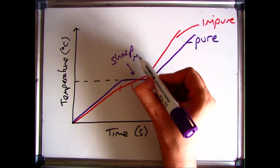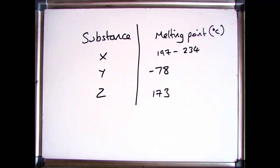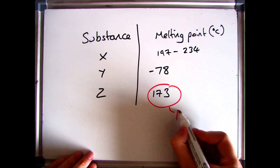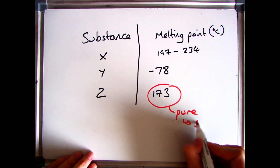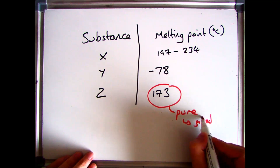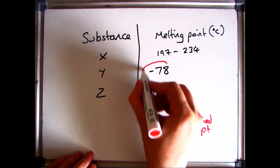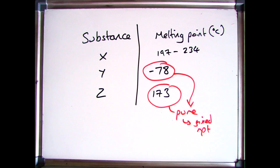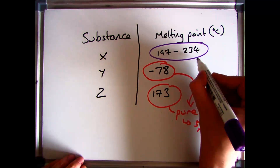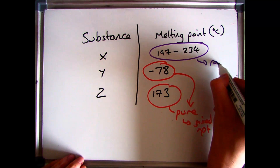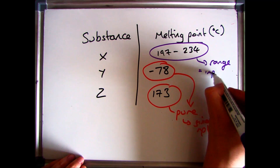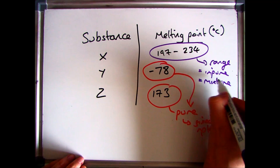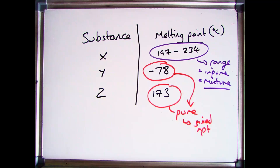So if you were asked to sketch these, that is what you would have to do. If you're given different melting points in a table, the ones that have just one melting point are your pure ones - for example, minus 78 or 173, just one melting point means it is pure. If the melting point is over a range, like substance X here, it means it's impure - you've got a mixture of different substances.